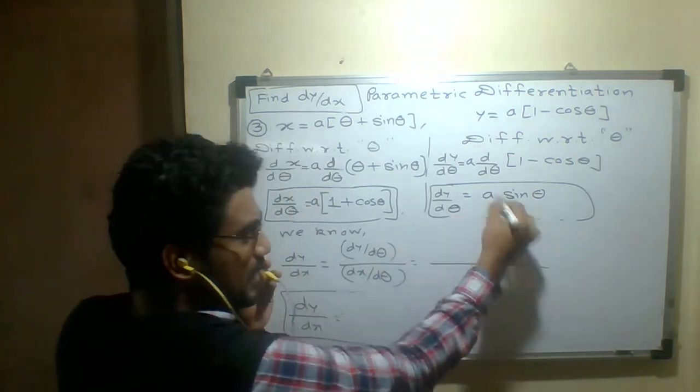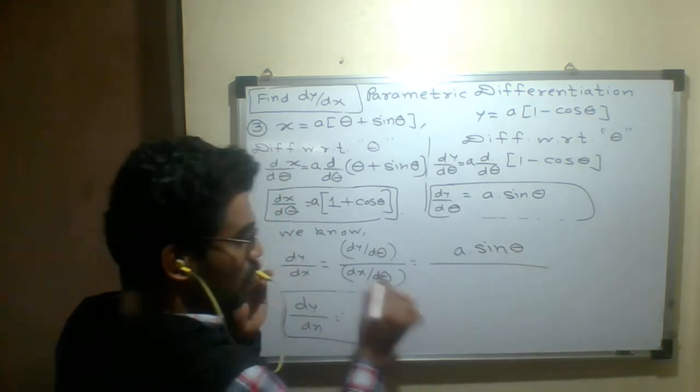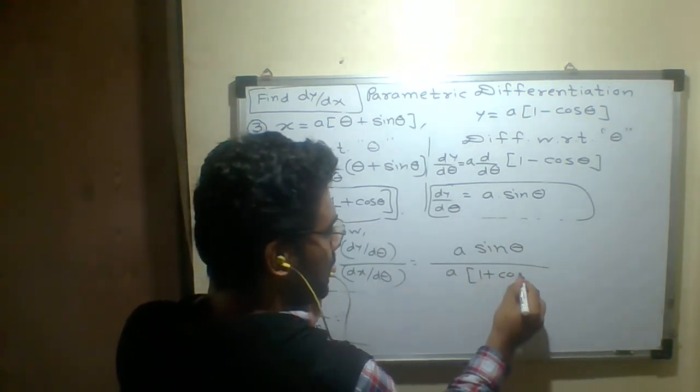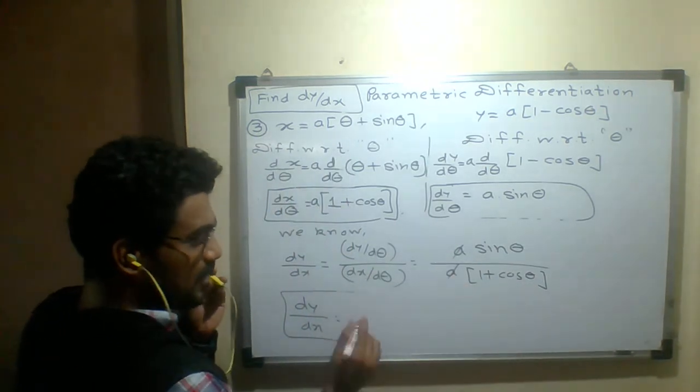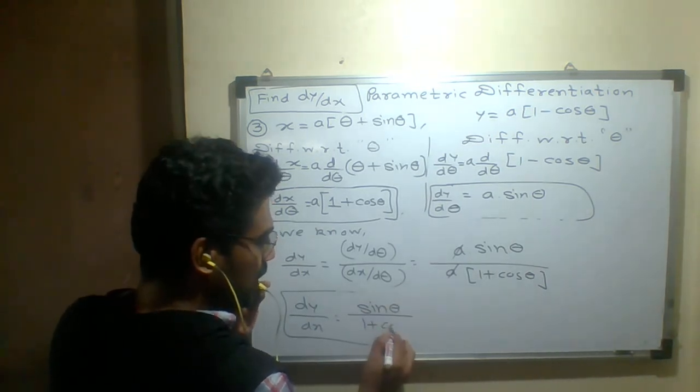What is dy/dθ? a sin θ. What is dx/dθ? a(1 + cos θ). So a gets cancelled. The answer is sin θ/(1 + cos θ). What is the final answer?